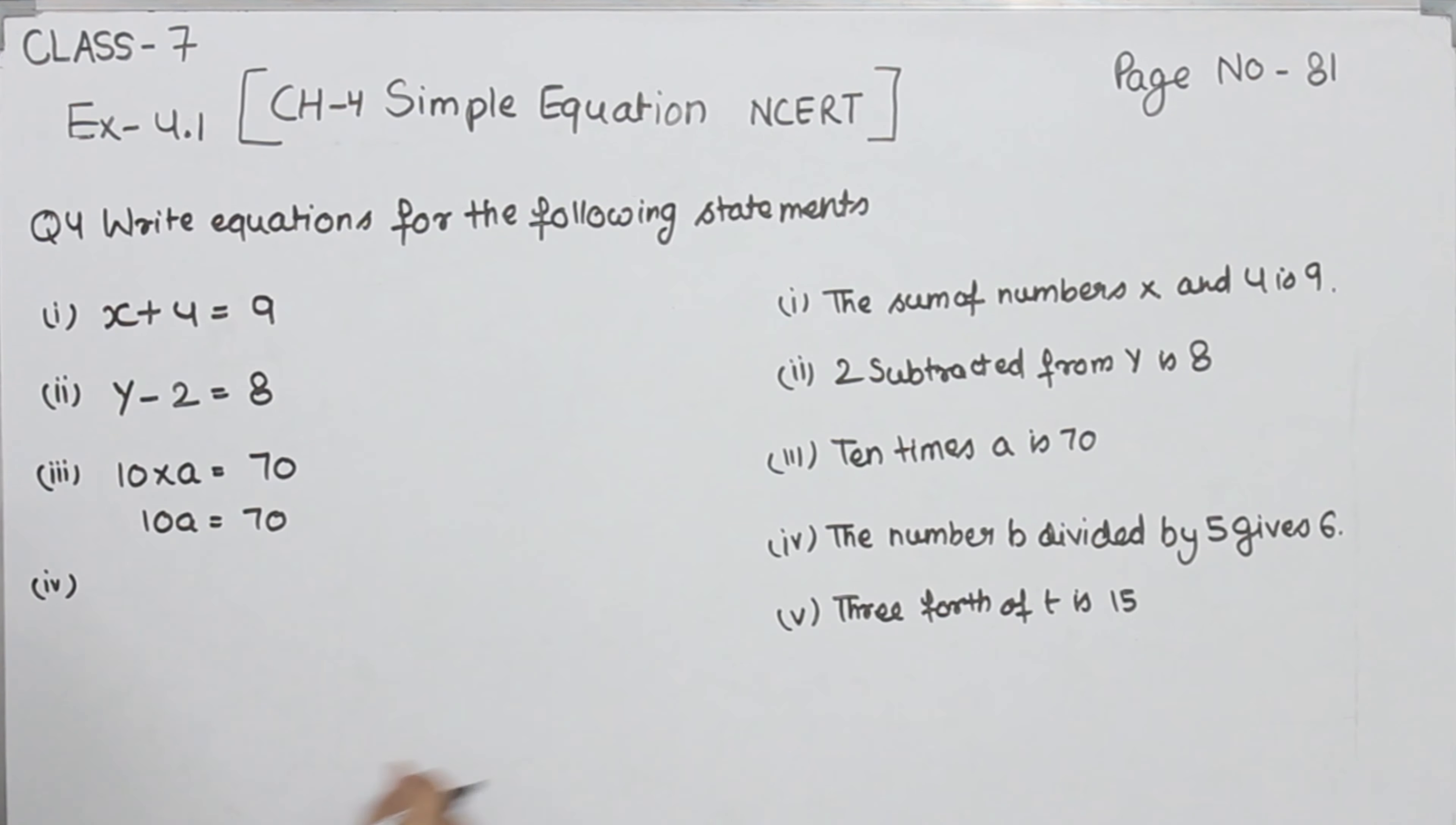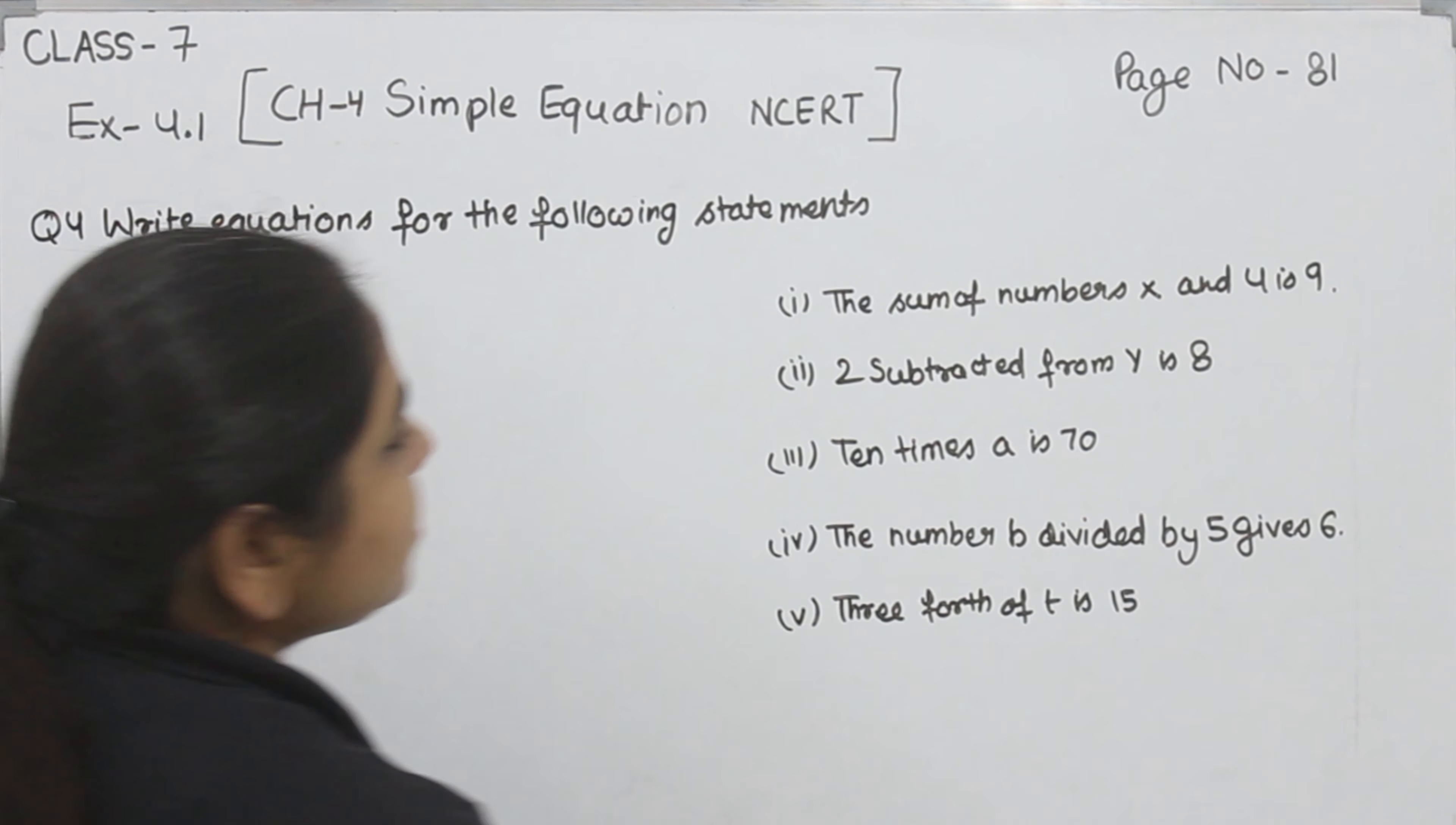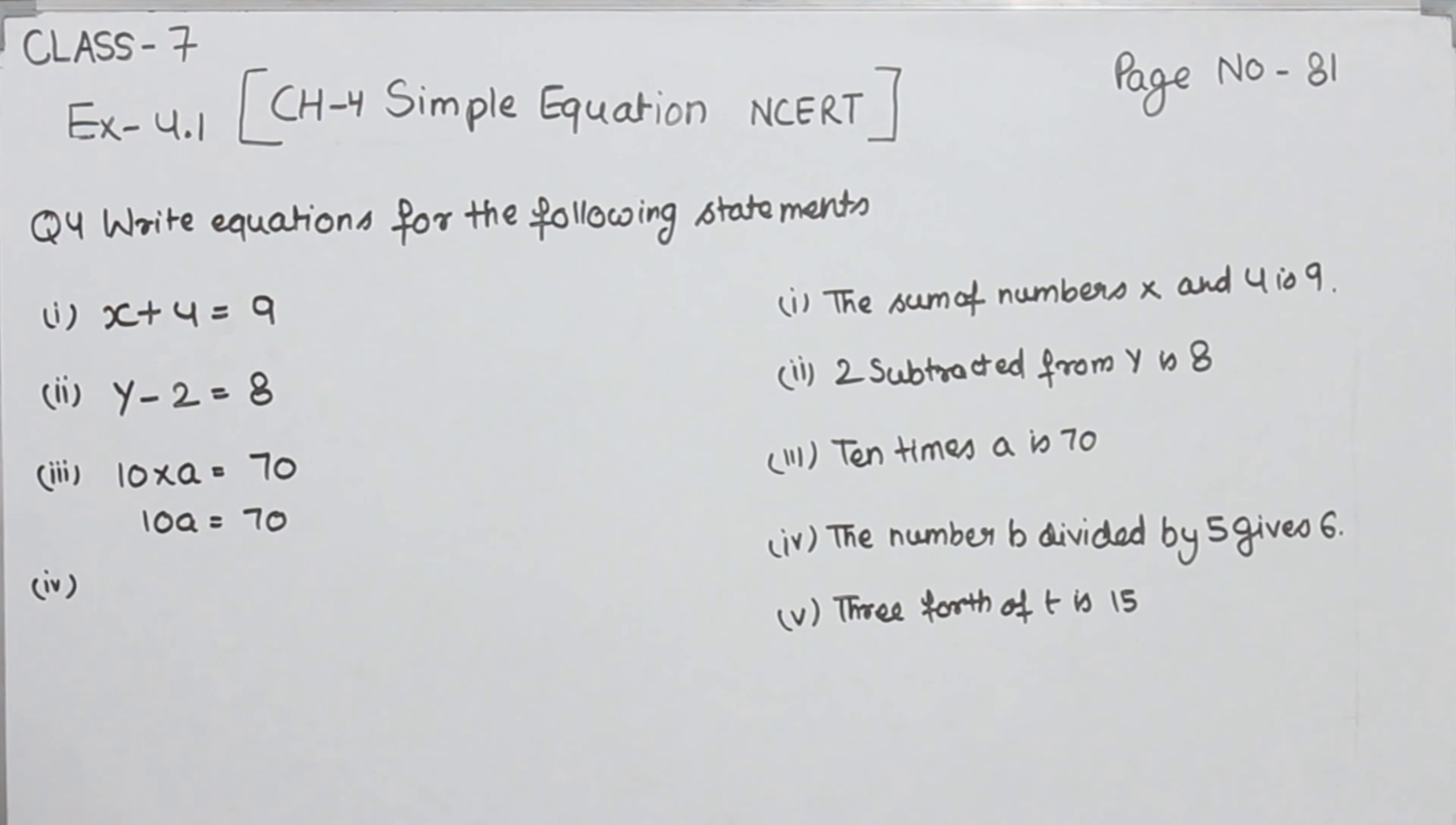Now part 4. The number b divided by 5 gives 6. Now number b is divided by 5, so we are going to write this statement: b divided by 5 is equal to 6. This is part 4.